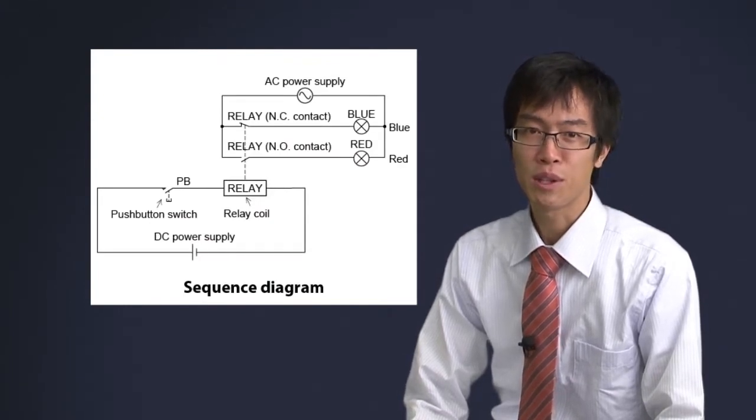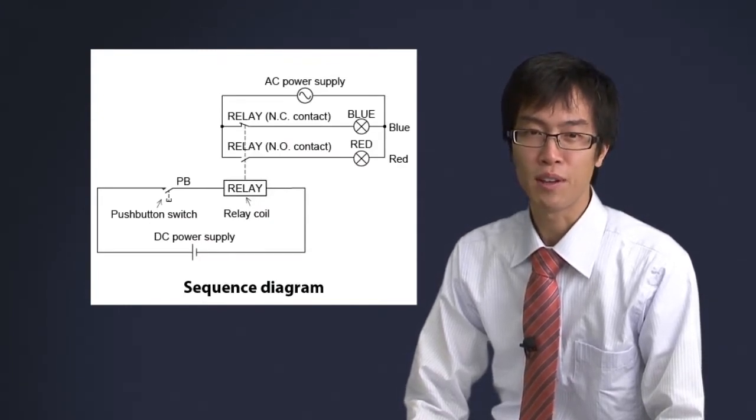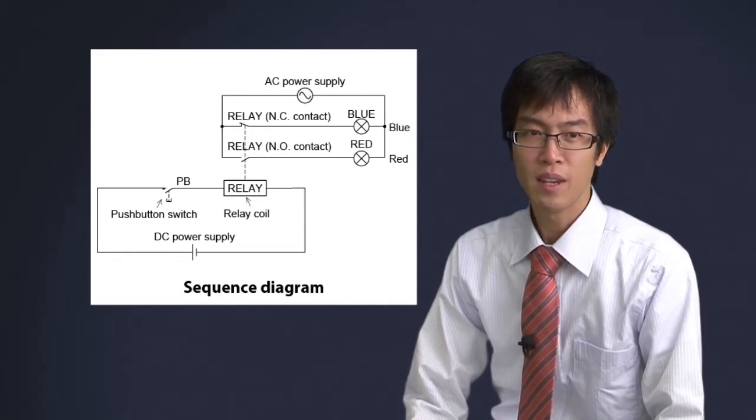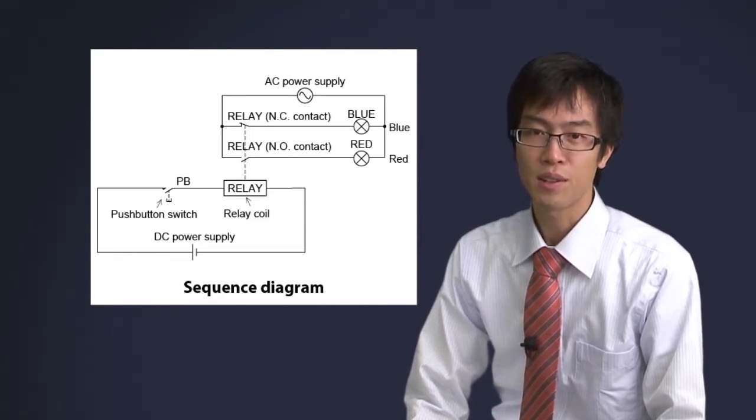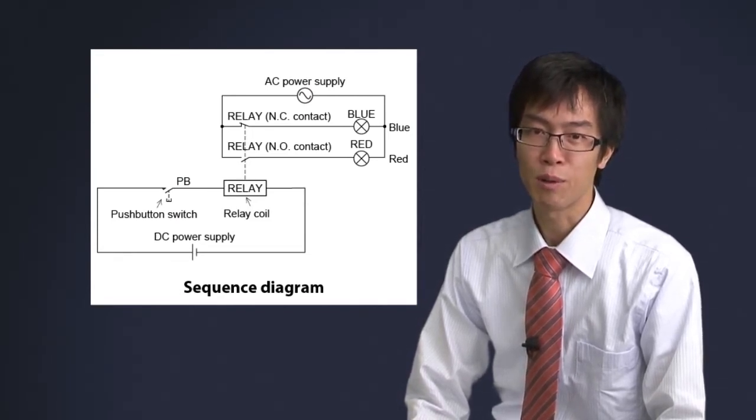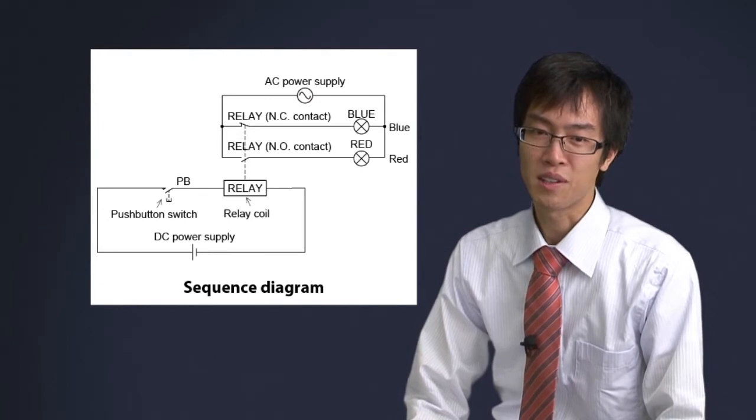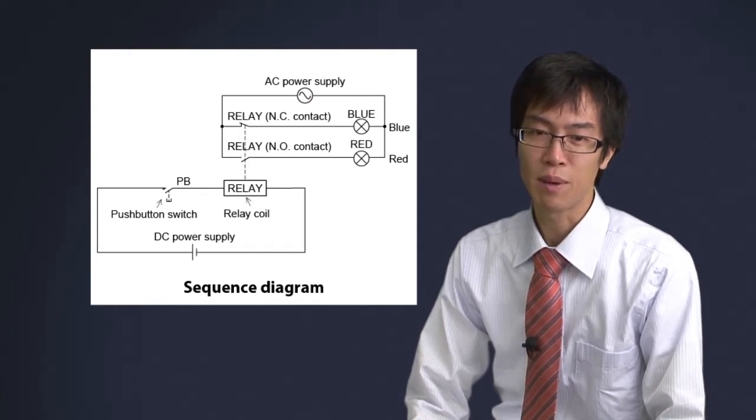And so, we use sequence diagrams to easier understand the order of operation. In sequence diagrams, contacts and relays are arranged in order of operation and connected by straight lines. This drawing is standardized and can be understood by any third party.